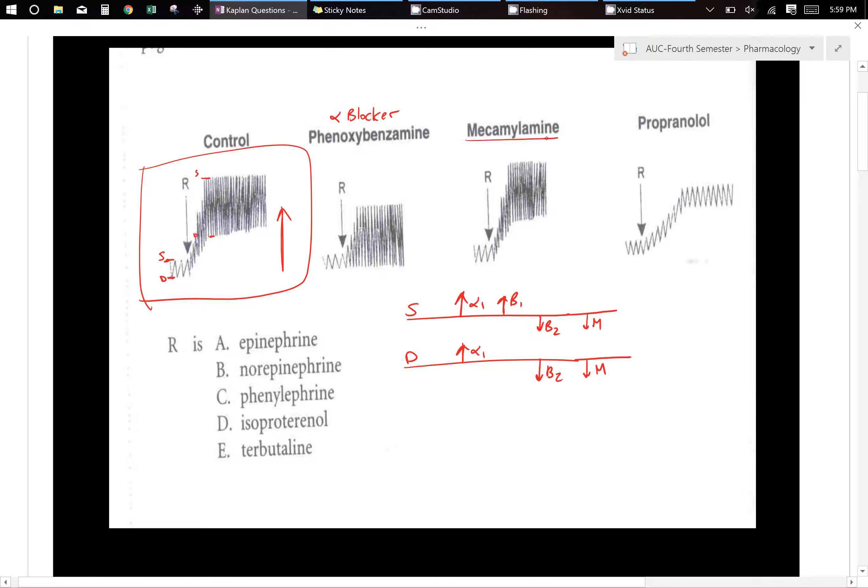Mecamylamine is going to be a ganglion blocker. So remember what ganglion blockers do. First thing is that they kill predominant tone and the other thing that they do is that they stop reflexes.